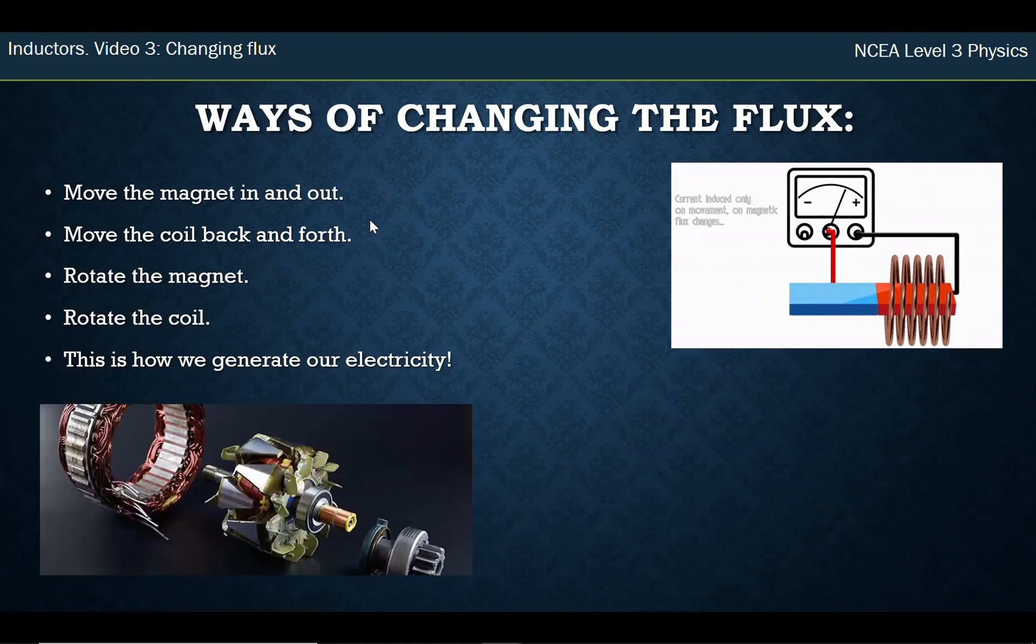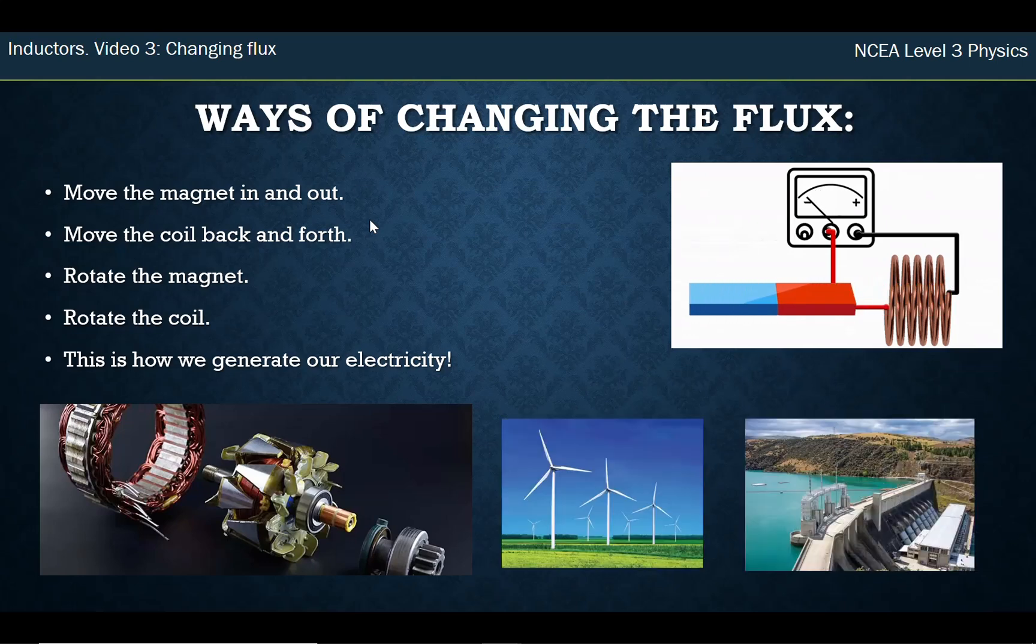This is the inside of a generator. You can see all the coils, and it rotates around. The thing that rotates it, that gives it the energy to turn into electricity, is either wind, or water falling which turns a turbine, or geothermal, which is hot steam that comes out of the ground and turns a turbine as well. All of these are ways of turning something, and the thing that turns is either a coil or a magnet. That changes the flux and we generate electricity.